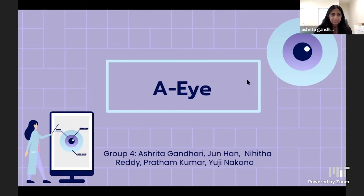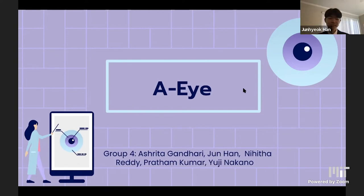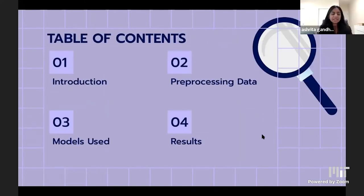My name is Ashripa. I'm June. I'm Nihita. I'm Brintan. And I'm Yuti. This is a general overview of our presentation. We'll start with our mission statement, then pre-processing our data, models used and challenges, and finally a conclusion of results and future steps.